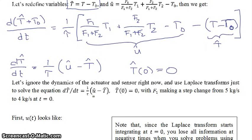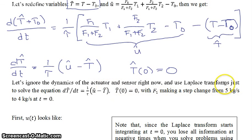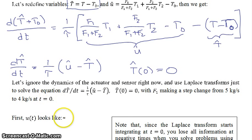For now we're going to ignore the dynamics of the actuator and sensor, since this is a simple example, and we're going to use the Laplace transform method to solve this differential equation. We consider f1 making a step change from 5 kg/s to 4 kg/s at t equals 0.